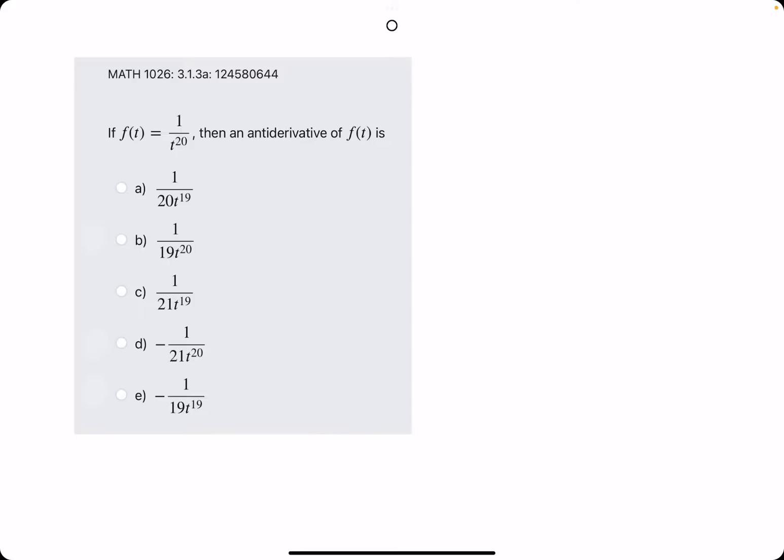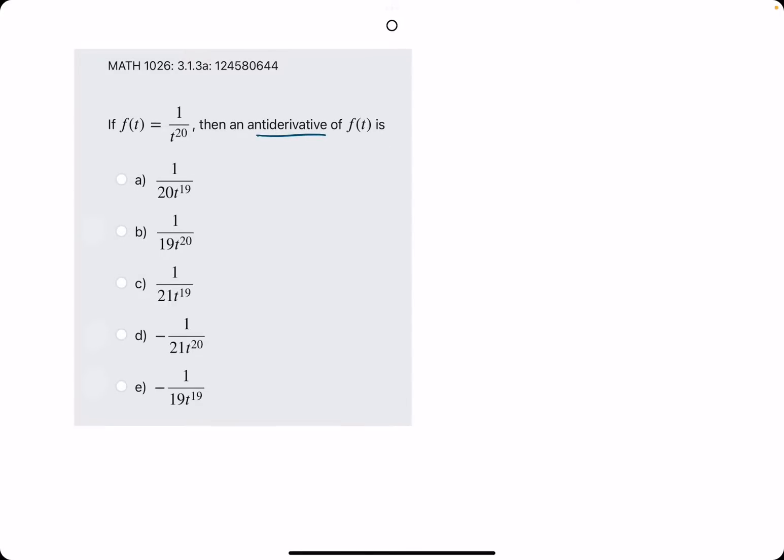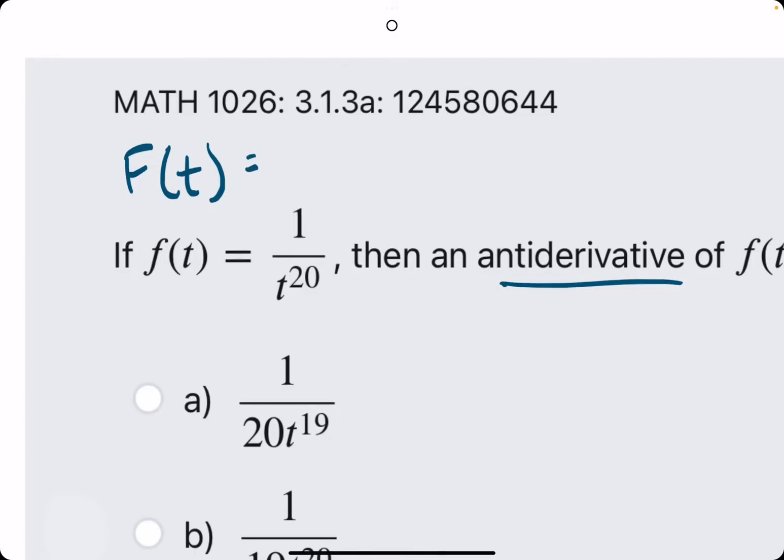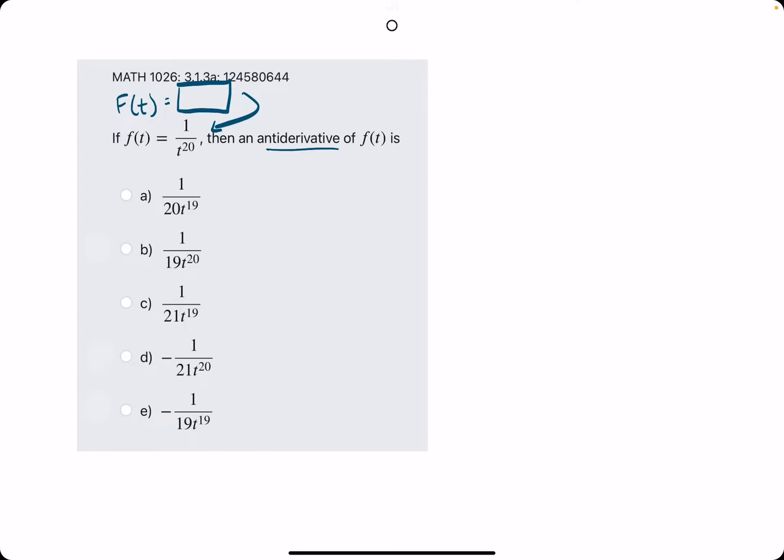What we have to do is not take the derivative but what's known as the anti-derivative. In other words, we're trying to find the function, say capital F of t, for which when we take the derivative of this, we get 1 over t to the 20th. So, how do we go about this?